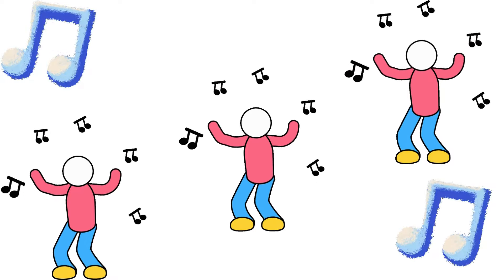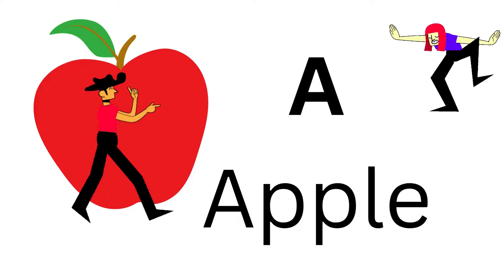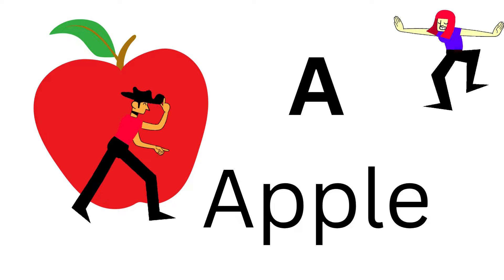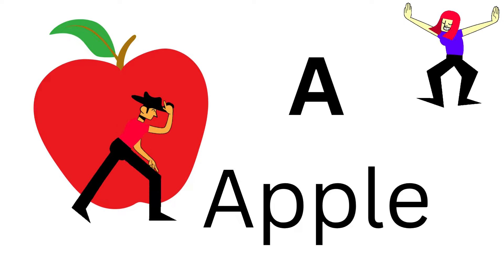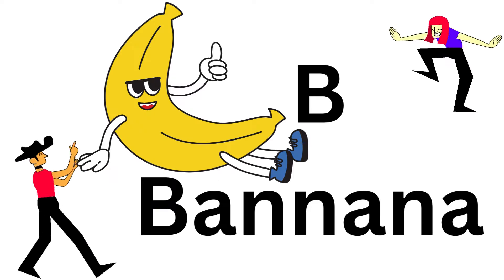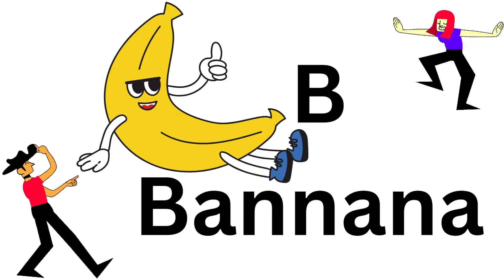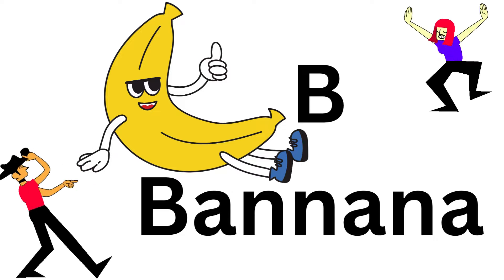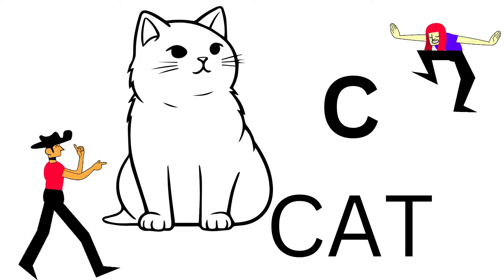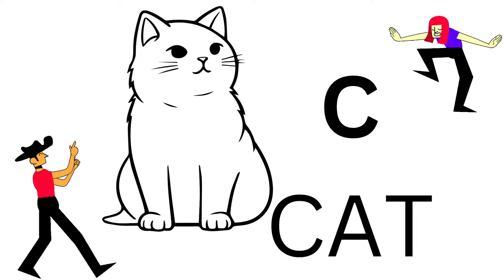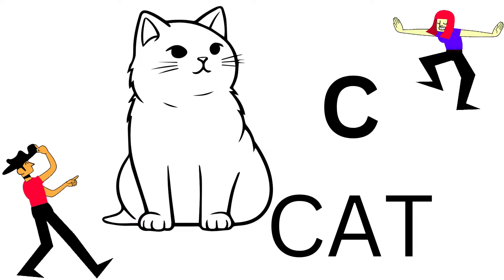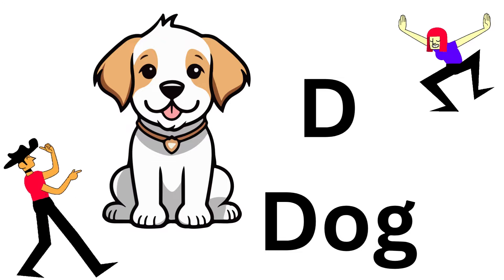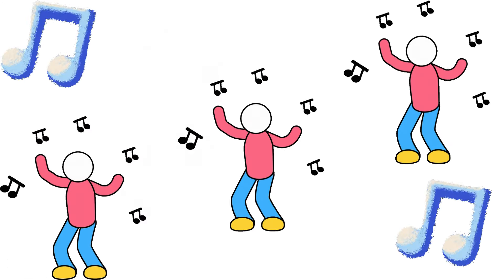A's for the apple, juicy and red. B's for the banana, yellow instead. C's for the cat that's fluffy and white. D's for the dog who barks through the night. Ding, dang, dong, ding, dang, dong.